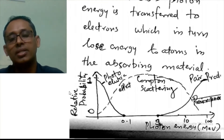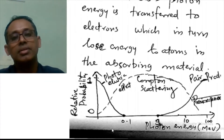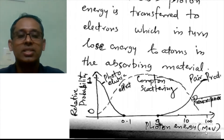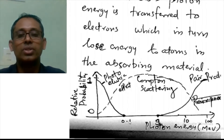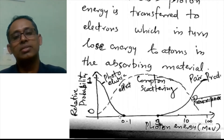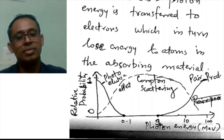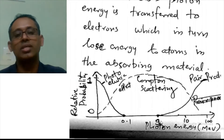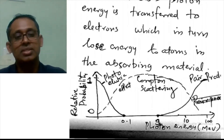We have taken the relative probability here, which changes from 0 to 1, and the photon energy is given in mega electron volts. Up to 0.1 MeV, at low energies, the photoelectric effect dominates. Above 0.1 MeV, Compton scattering dominates. For higher energies — above 1 MeV — the pair production process dominates.